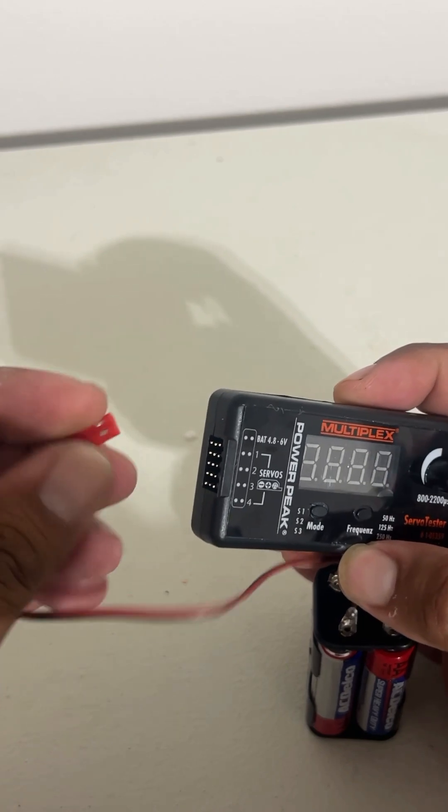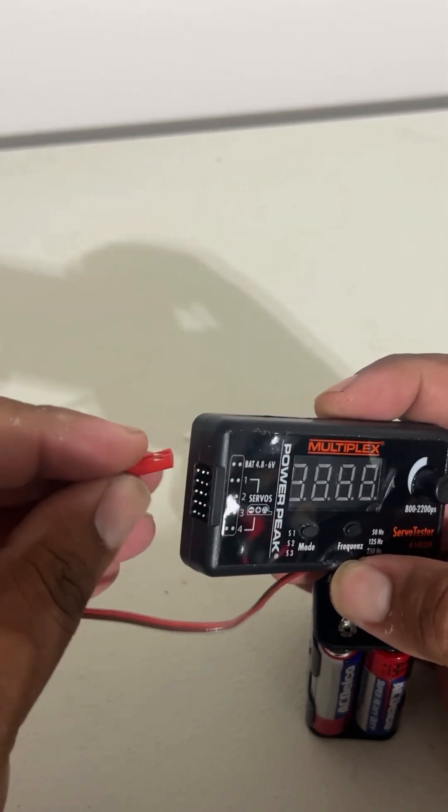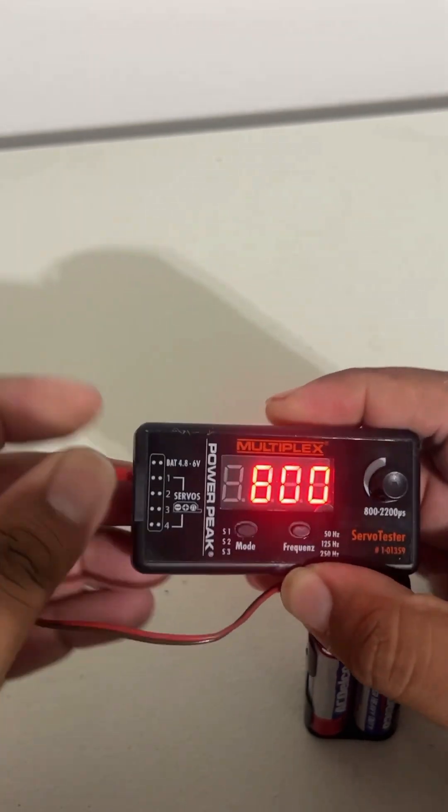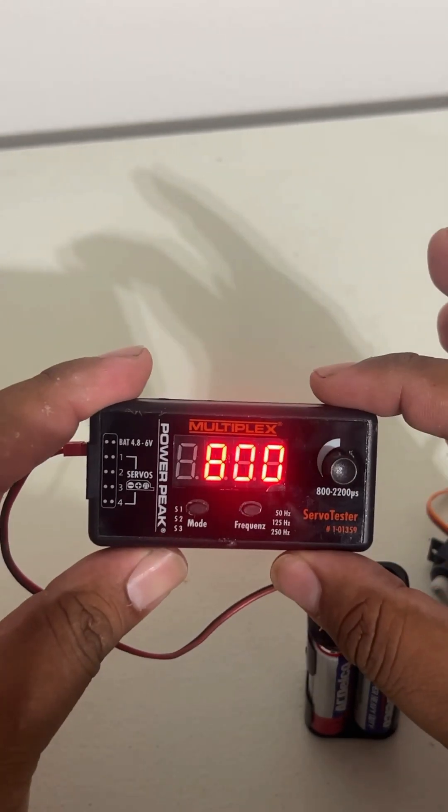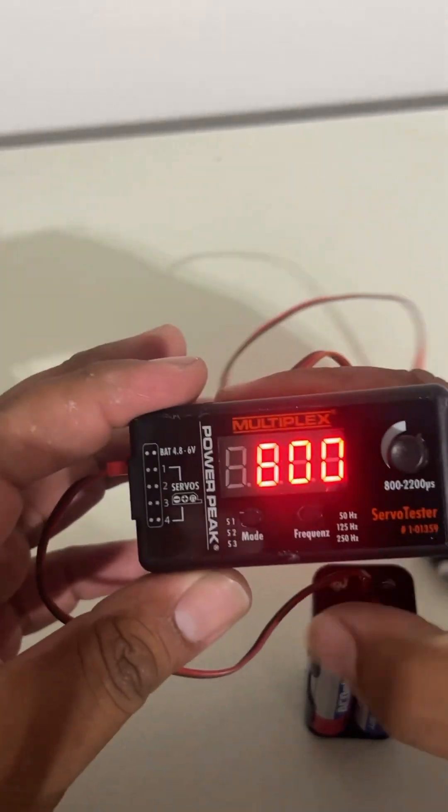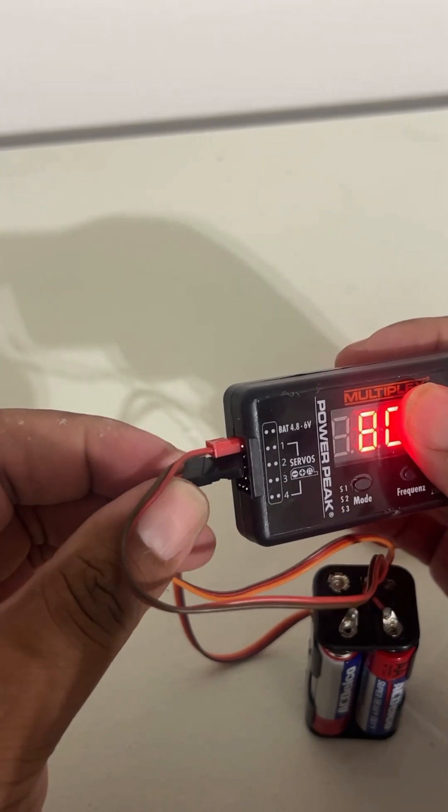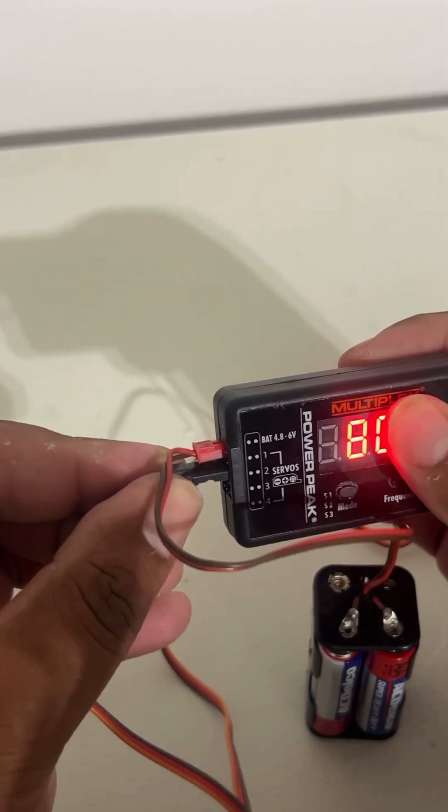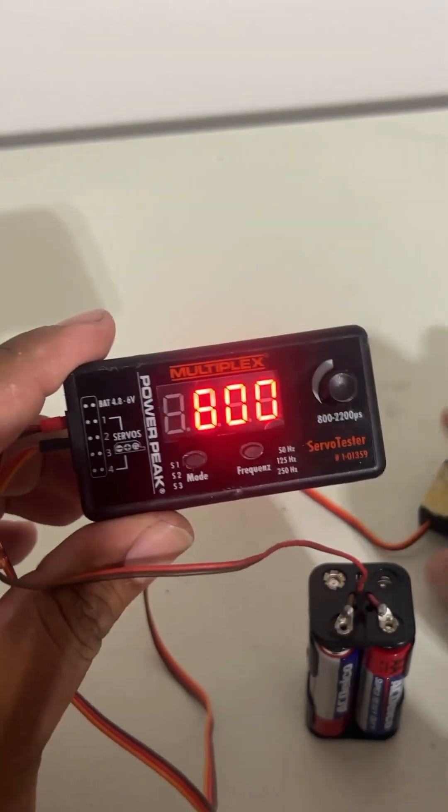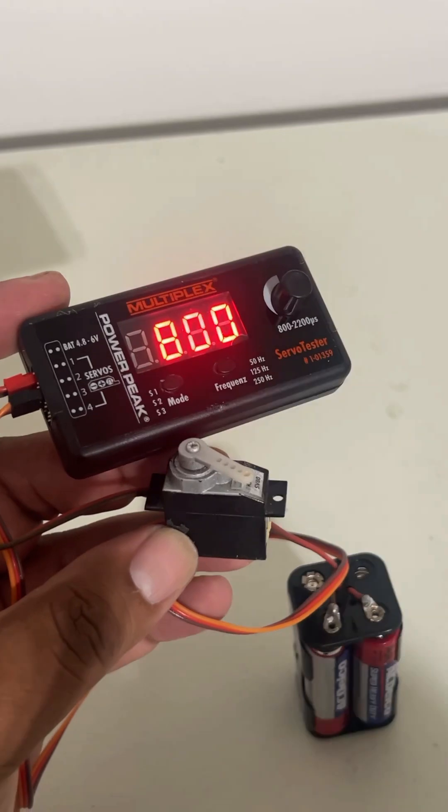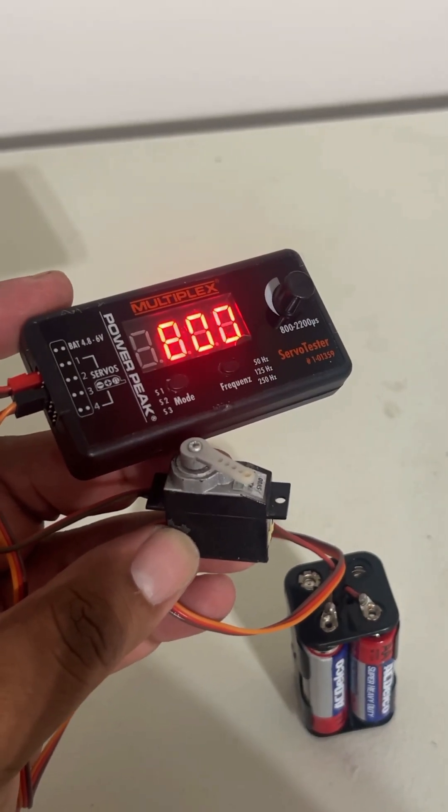It should look like this. The servo tester will turn on. And then you're going to grab your servo lead and install it on that first slot. You could do second or third. Actually, I'll do the second slot just so it's easier for you guys to see. So it's in the second slot now, and I'm going to zoom out a little bit so you can see this whole situation.